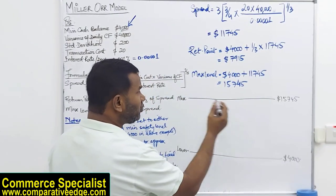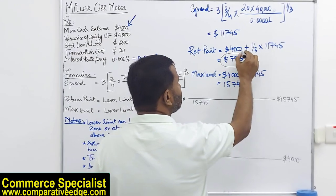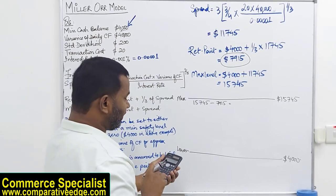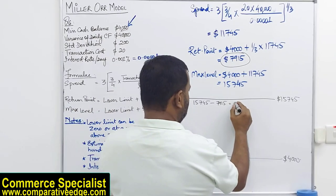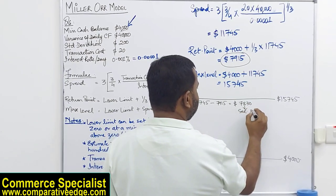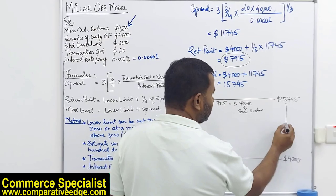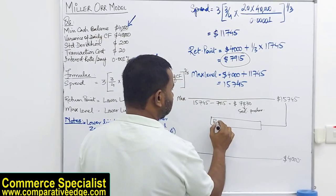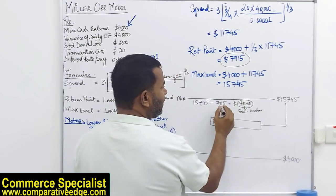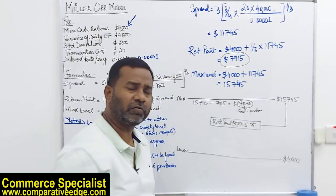How much marketable securities to purchase? Maximum level 15,745 minus return point 7,915 = 7,830 worth of securities should be purchased. After purchasing, the cash balance drops from 15,745 back to the return point of 7,915, which is the ideal amount of cash balance to be maintained at any given point.